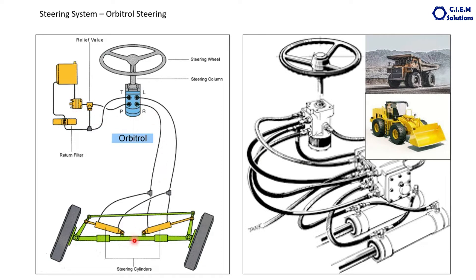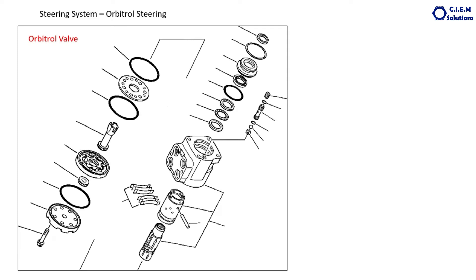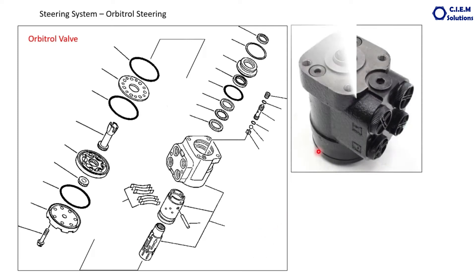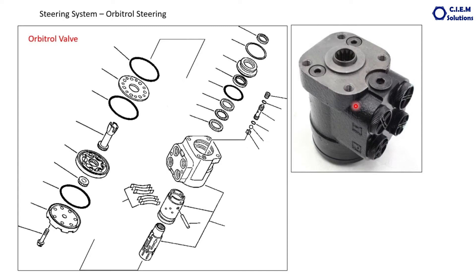Let's look at how each component works. This illustration is about the orbital valve. An assembled orbital valve looks like this. This is the casing, this is the inner spool — you can see the slots in the spool — and this is the outer spool. Both together are held with the help of a pin called the deflector pin.